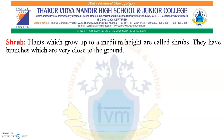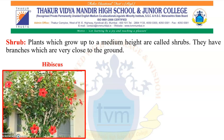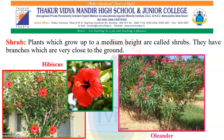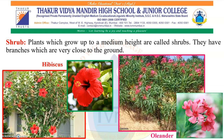Next are shrubs. Plants which grow up to a medium height are called shrubs. They have branches very close to the ground, are shorter and smaller than trees, but have a thick and hard stem. Examples include hibiscus and oleander.